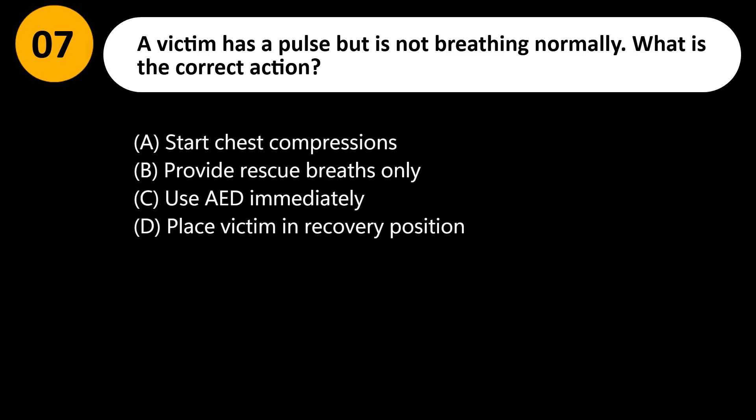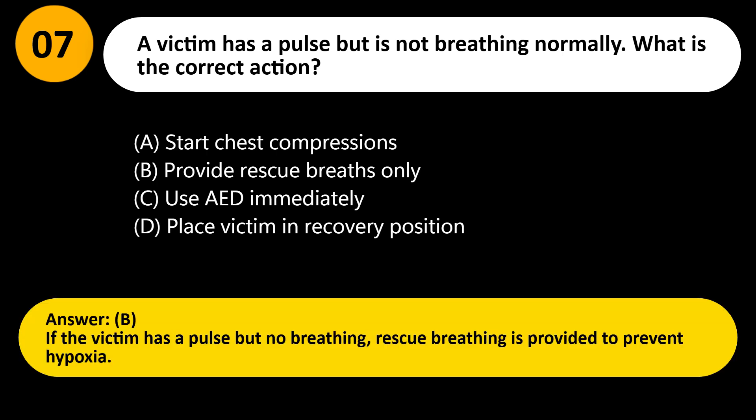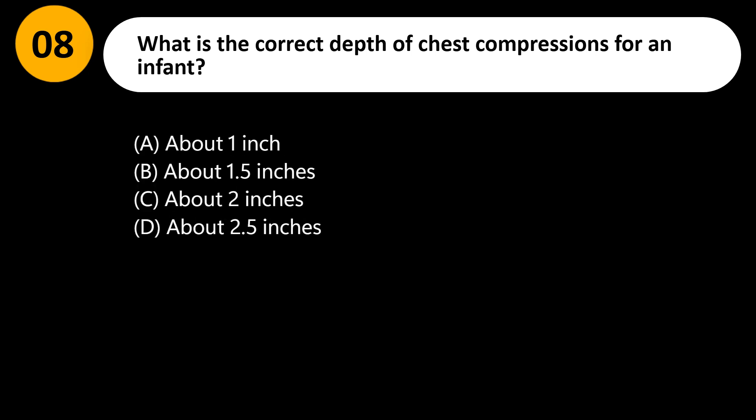A victim has a pulse but is not breathing normally. What is the correct action? A) Start chest compressions, B) Provide rescue breaths only, C) Use AED immediately, D) Place victim in recovery position. Answer: B. If the victim has a pulse but no breathing, rescue breathing is provided to prevent hypoxia.